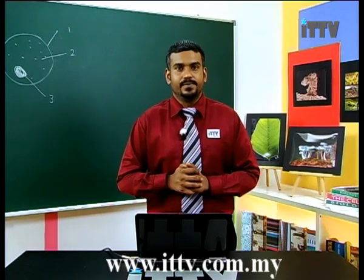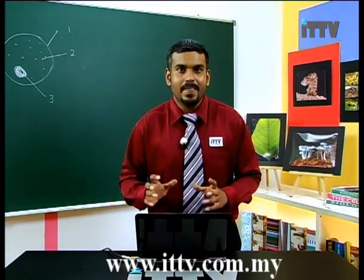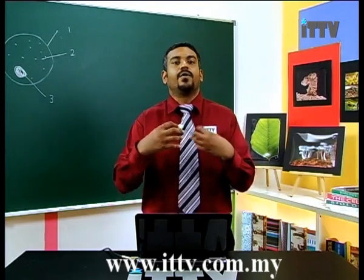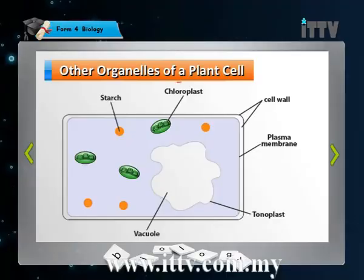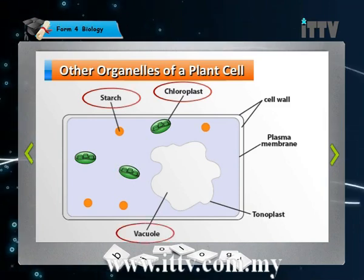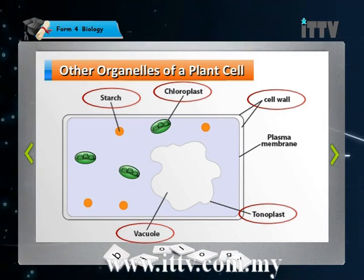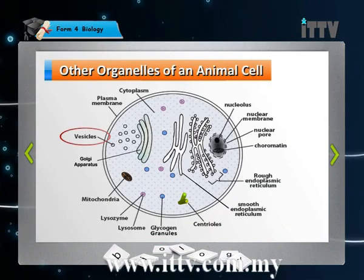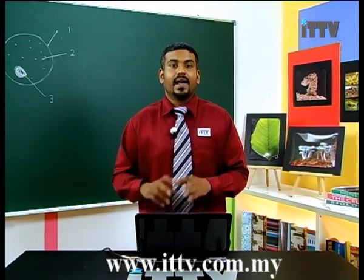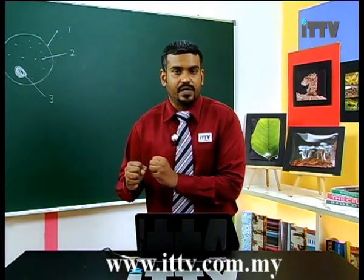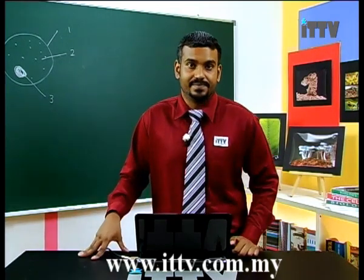One last question: how come the animal cell had so many organelles and the plant cell had so few? All the organelles you saw in the animal cell can also be found in the plant cell, except for certain ones. You will not find chloroplast, starch, the central vacuole, the tonoplast, and the cell wall in an animal cell. You will not find vesicles, lysosomes, and centrioles in a plant cell. Plant cells store food as starch; animal cells store food as glycogen.